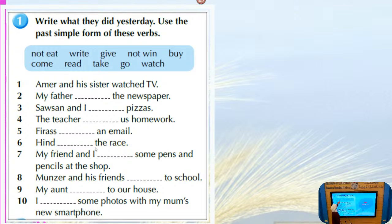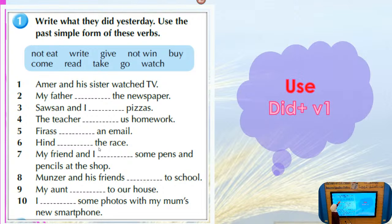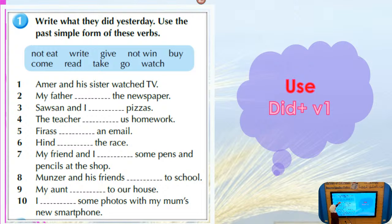The past of 'write' is 'wrote'. 'Give' becomes 'gave'. 'Not win' becomes 'didn't win'. 'Buy' becomes 'bought'. 'Come' becomes 'came'. 'Read' stays 'read'. 'Take' becomes 'took'. 'Go' becomes 'went'. 'Watch' becomes 'watched' — it's regular.